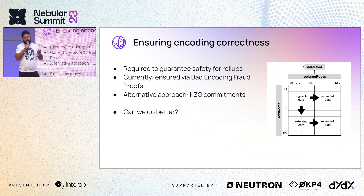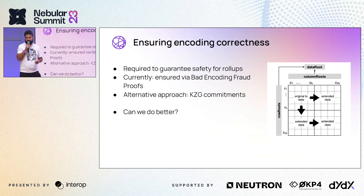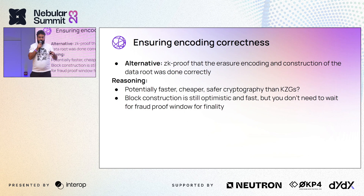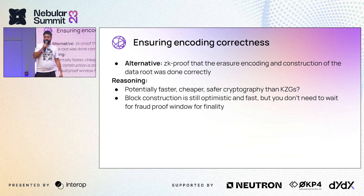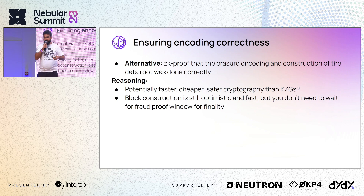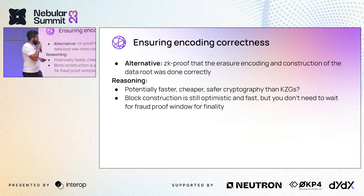Bad encoding fraud proofs have the downside that light clients need to wait for them before the block is final. One way to avoid that is using KZG commitments — that's what Polygon Avail is doing and Ethereum was also considering. We think we can do better: instead, we compute a zero-knowledge proof that the erasure coding and block construction and commitment was done correctly. This has many benefits — the computation is still fast, and you can immediately send around a small proof, giving immediate finality without waiting for a bad encoding fraud proof.